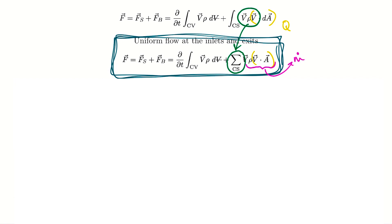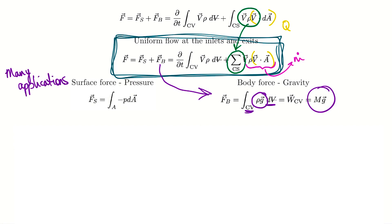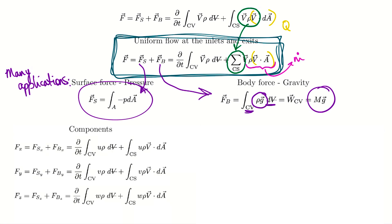The remaining terms include body forces — that's gravity. To find gravity we integrate rho G over the control volume, which is just the weight of the control volume, also written as MG where M is the total mass. In many applications the surface forces are pressure, acting along the surface of the control volume. To calculate pressure forces we take pressure times area, with a negative sign to maintain consistency since pressure acts against the control volume surfaces.